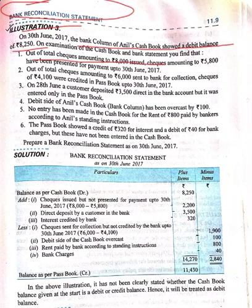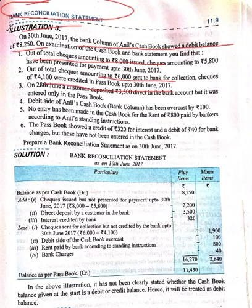Out of total cheques amounting to 6,000 sent to bank for collection, cheques of 4,100 have been credited in the passbook. We thought that 6,000 would be credited, but only 4,100 has been credited so far. The remaining 1,900 is still not credited, so it will be on the minus side.